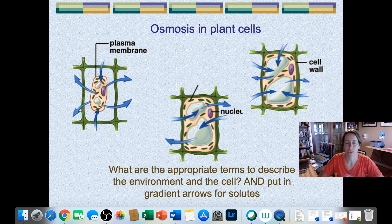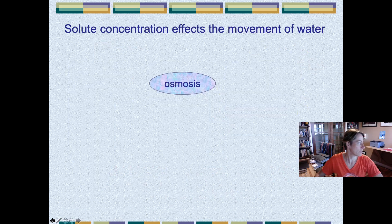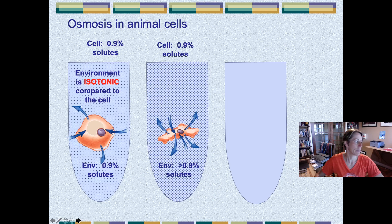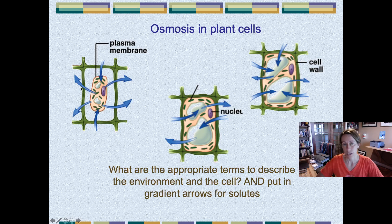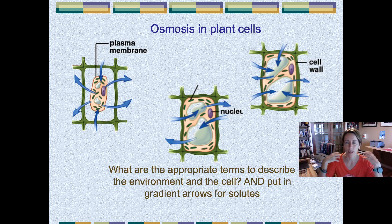I want to review this slide. I left it up there at the end of the last presentation for you to practice figuring out some sentences for these diagrams. Just to review on the first diagram, we can say that the environment is hypertonic compared to the cell. Since all the water is exiting the cell, there must be more solutes on the outside. So the environment is hypertonic on the first picture compared to the cell, or you can say the cell is hypotonic to the environment.